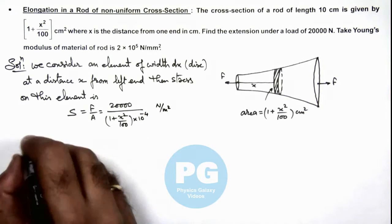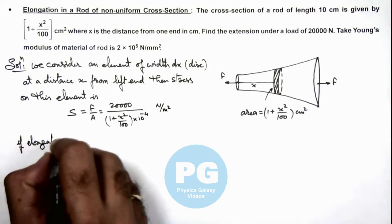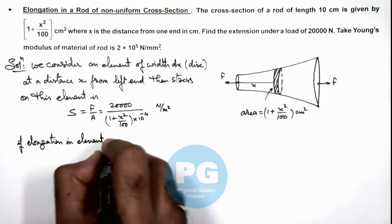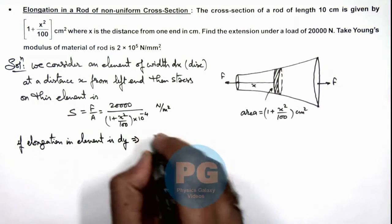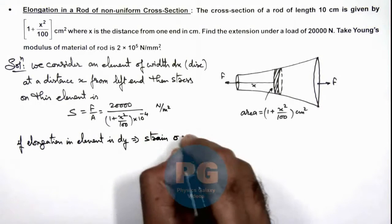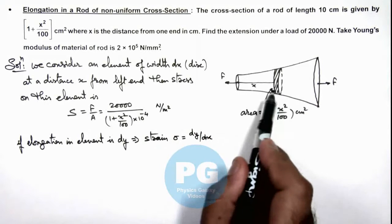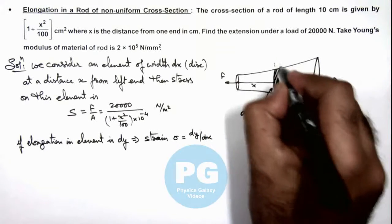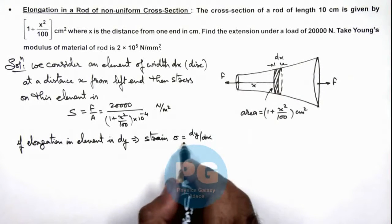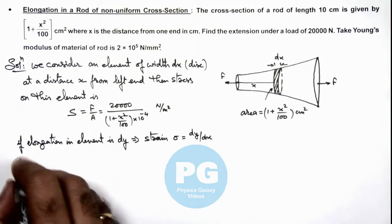Now if elongation in element is dy, this implies here we can write the strain which we denote by sigma can be written as dy by dx. As in the width dx, here we consider this width to be dx, and in this width dx if elongation is dy, the strain in the element is dy by dx.